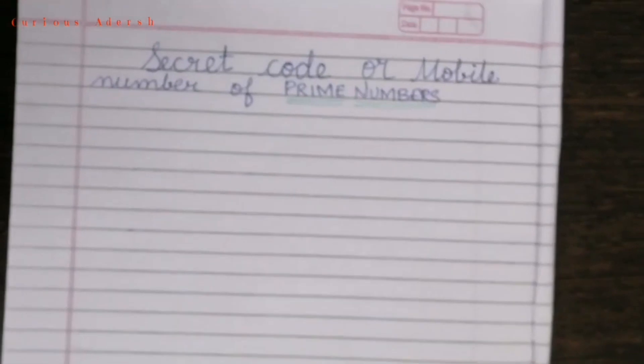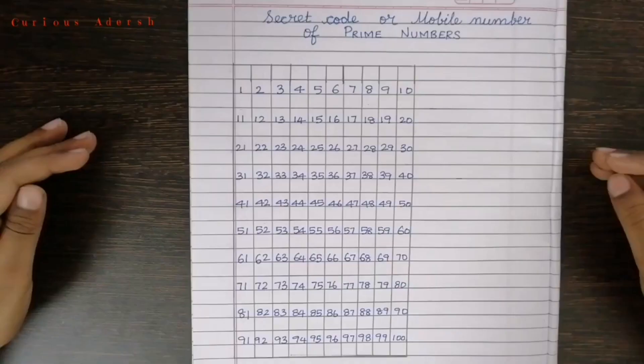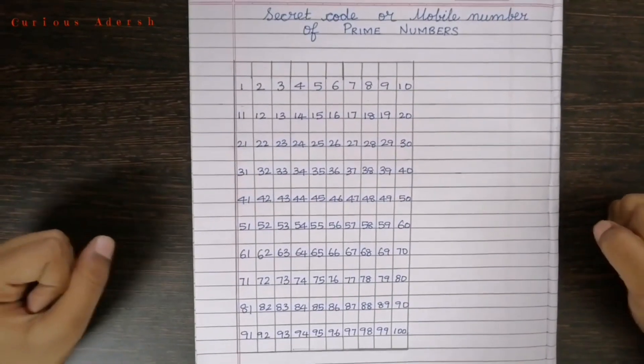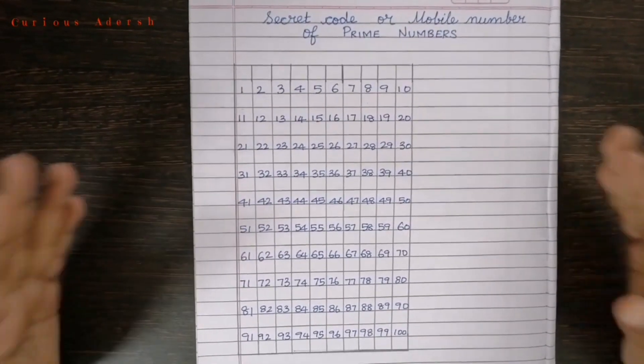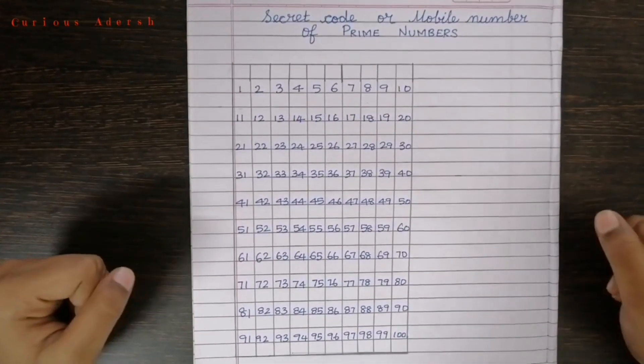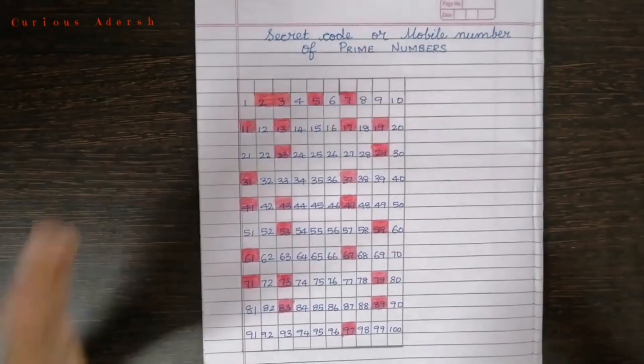Let's see. So, what are prime numbers? The numbers divisible by one and only by itself are called prime numbers. Alright!